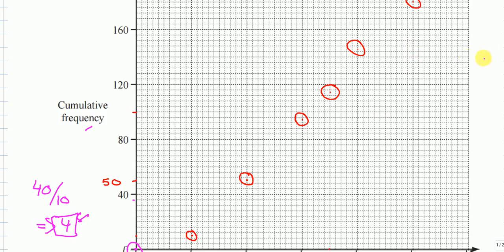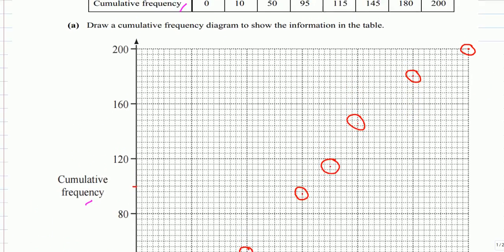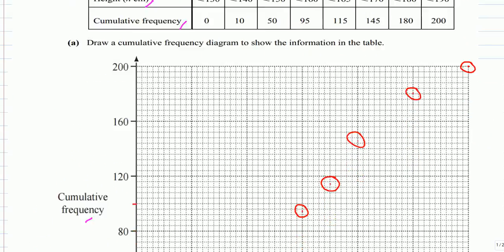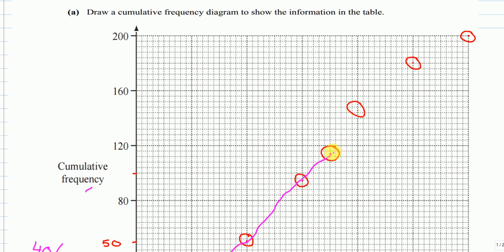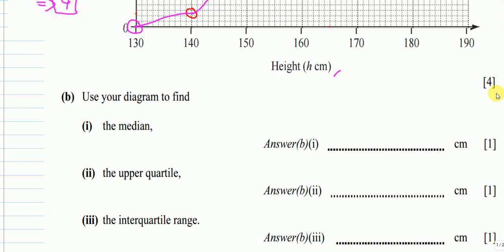Once you plot all the points, join them with a smooth curve. Use a ruler in your exam to join them — it will look much better. After joining these points we move to part (b).